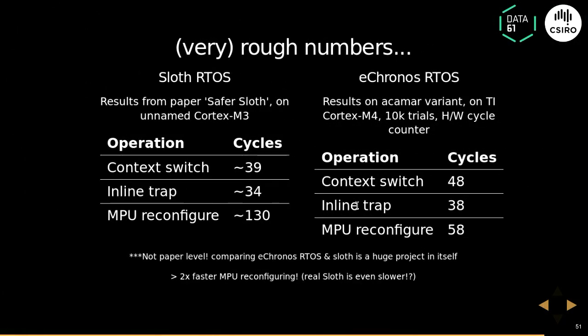Sloth is regarded in some academic circles as one of the fastest RTOSs around. Here are some rough non-paper numbers I did in a weekend. We're definitely close to sloth in terms of context switch and system call mode switch times, but as far as actually reconfiguring the memory protection unit — changing the list of regions on every context switch — we're actually a lot faster. I'm not exactly sure what the sloth guys are doing, but the code isn't open.